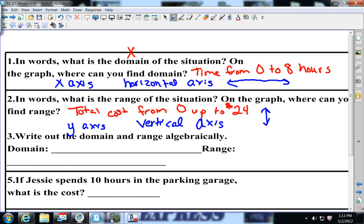On number three, it says write out the domain and range algebraically. Domain is X. X goes between, look what I'm doing with my arrows, what's the smallest number? Zero up to eight. There it is written algebraically in inequalities. The range, it's zero to 24, but what letter goes in there? I put a Y in there. Be careful to make sure you know the difference between Y and X.